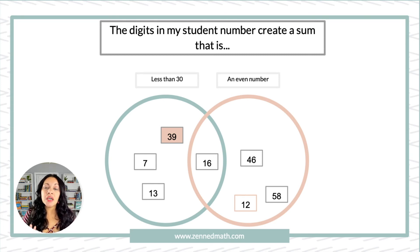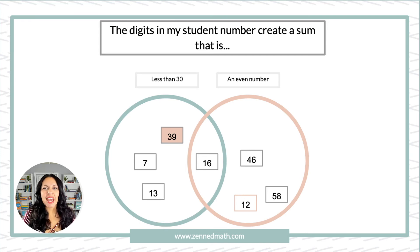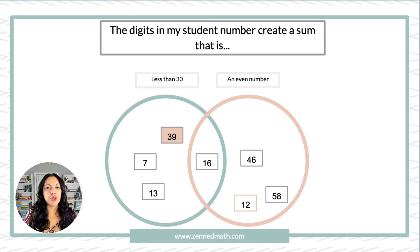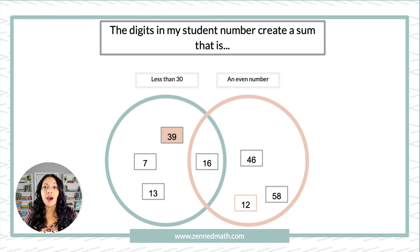What I recommend is having students place their initials on the back of the post-it so it's not seen by the class, with just the number on the front. At the end of the activity, you can snatch up the 12 and the 39, set them aside, and take anecdotal notes — for example, that the student with initials RS who placed 39 may need additional support.